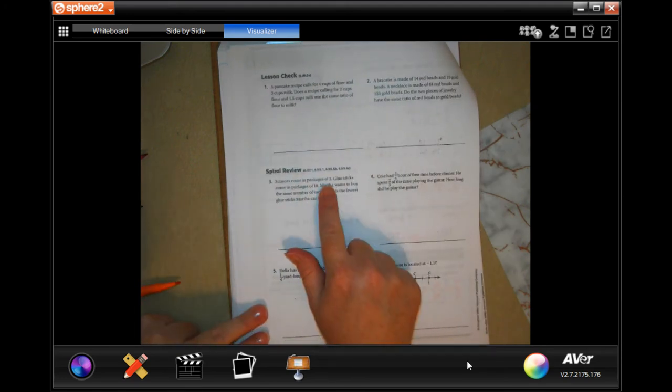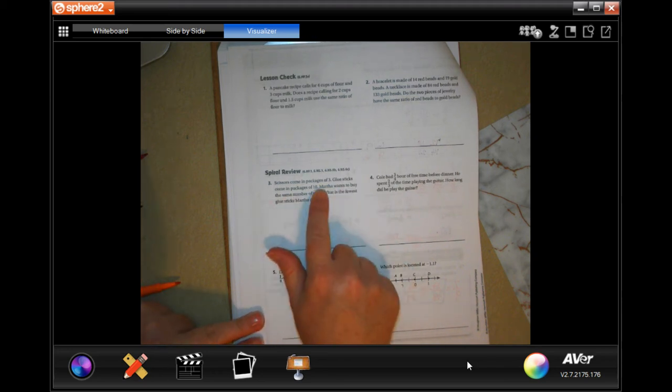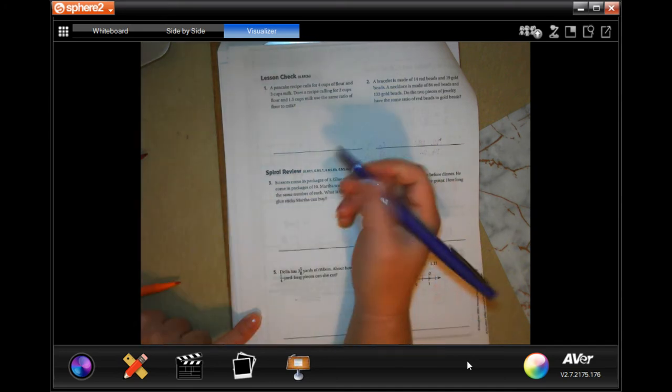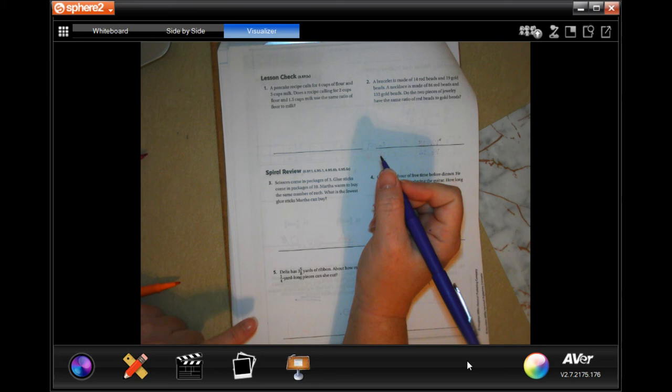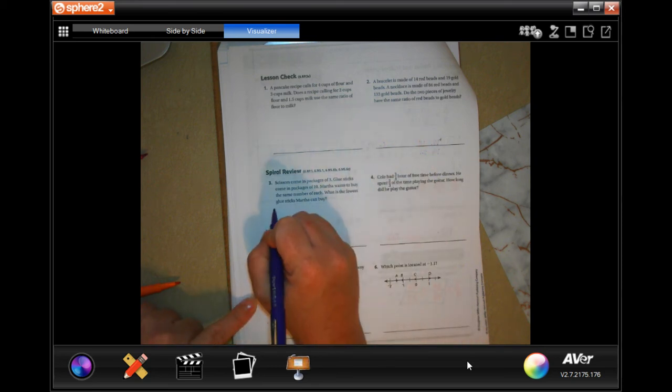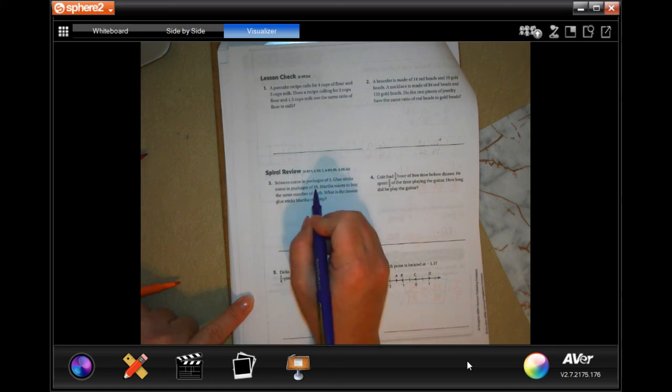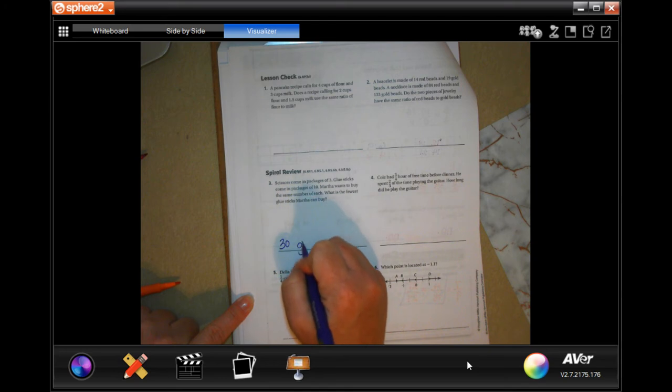Scissors come in packages of 3. Glue sticks come in packages of 10. Martha wants to buy the same number of each, what is the fewest glue sticks Martha can buy. So the least number of glue sticks she can buy is going to be 30 glue sticks, the smallest number they have in common.